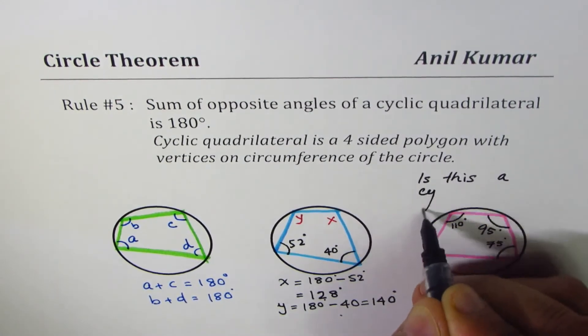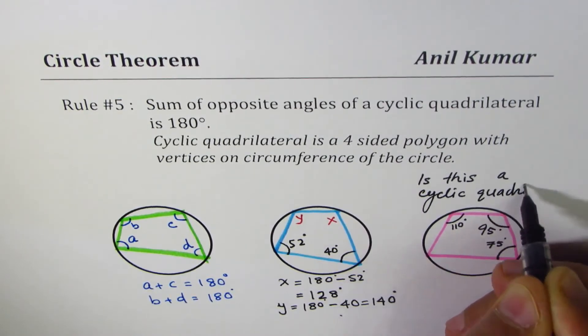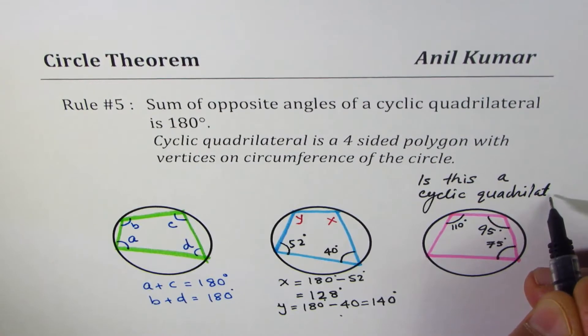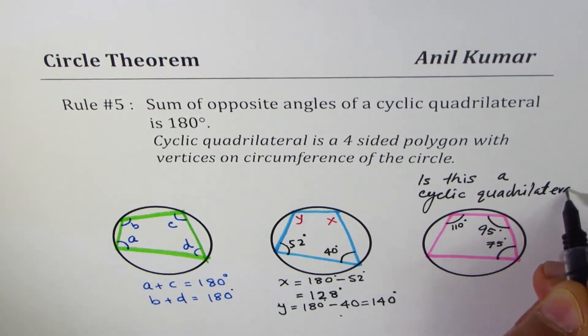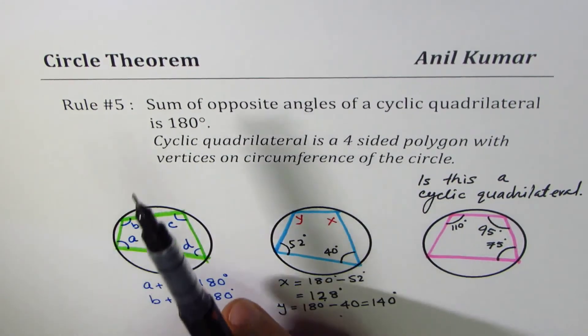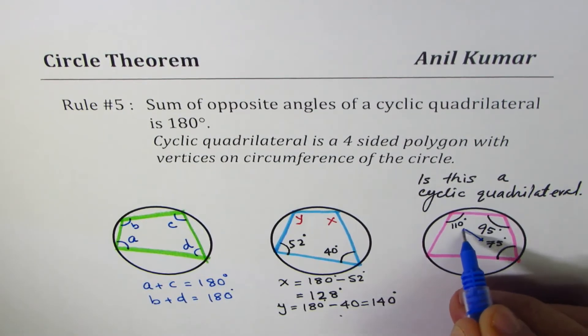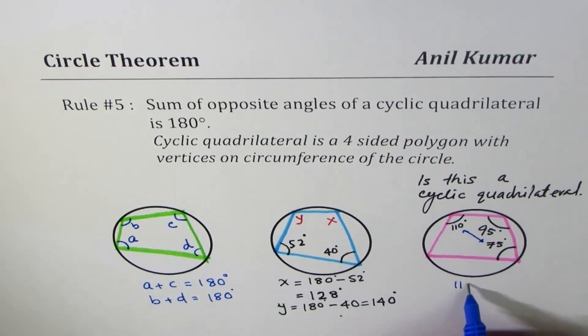The question is: is this a cyclic quadrilateral? Now to answer this question, the rule says that sum of opposite angles of a cyclic quadrilateral is 180 degrees. If we add these two, which is 110 degrees plus 75 degrees, what do we get? We get 185 degrees, not 180.